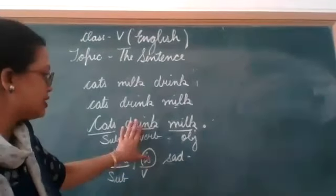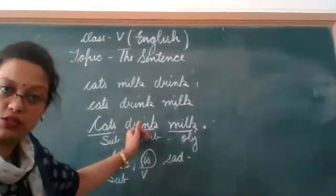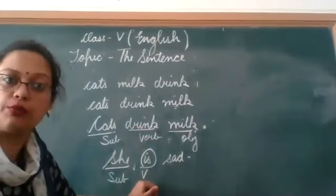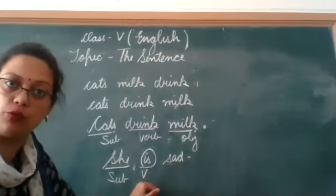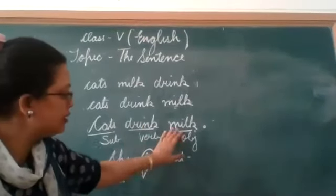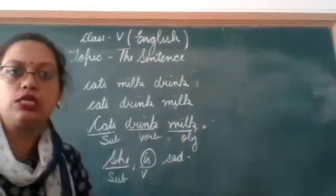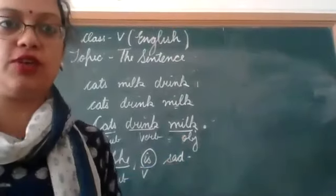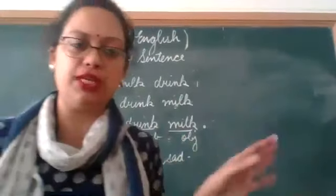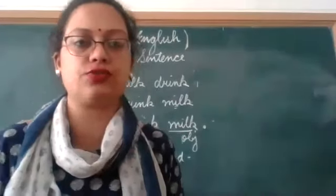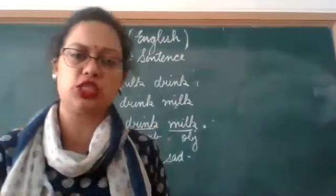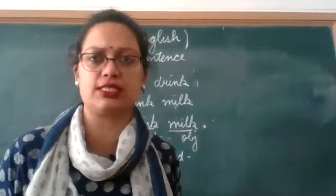So our verb can be either an action word or it can be a helping verb. The fourth thing we have is object. What is object? We have done a full complete chapter on this in class 4.